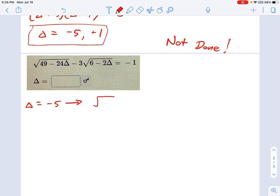What do we get? We get the square root of 49 minus 24 times negative 5. Okay, minus 3 times the square root of 6 minus 2 times negative 5 equals negative 1. Is that correct? That's what we're checking.